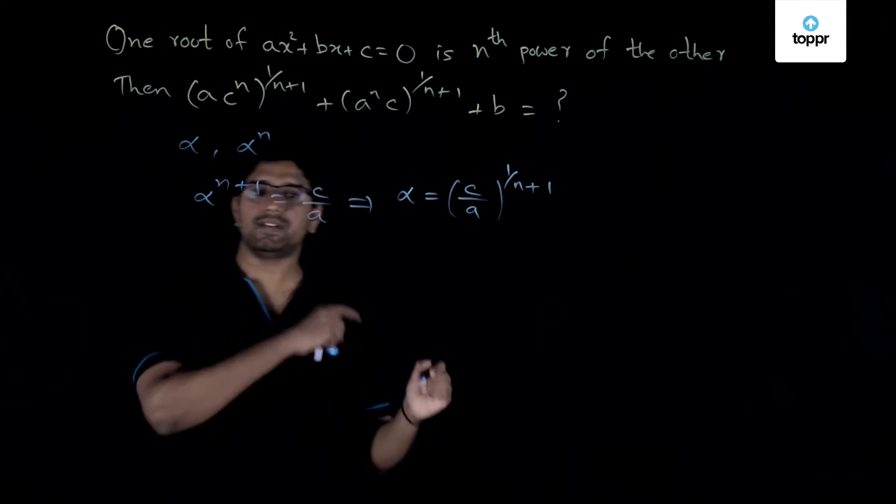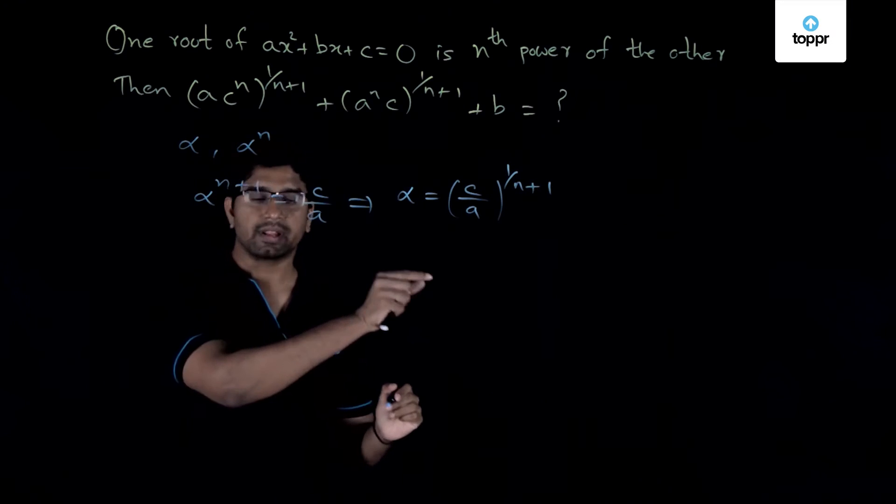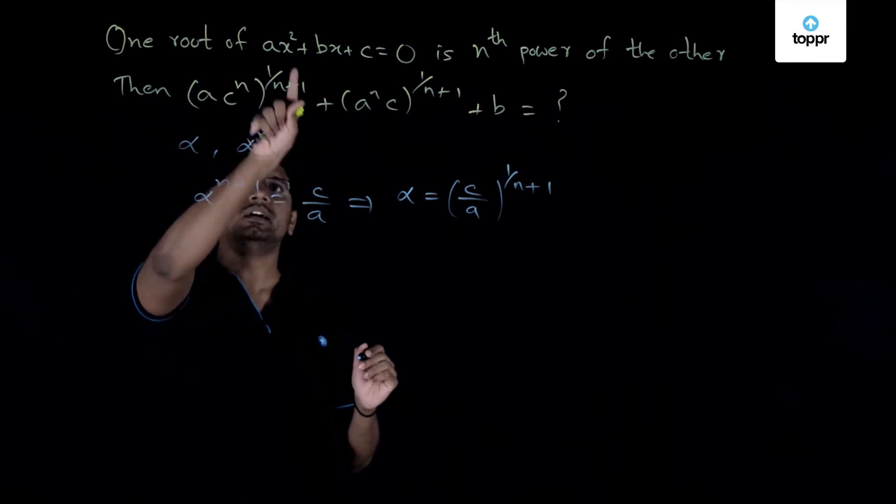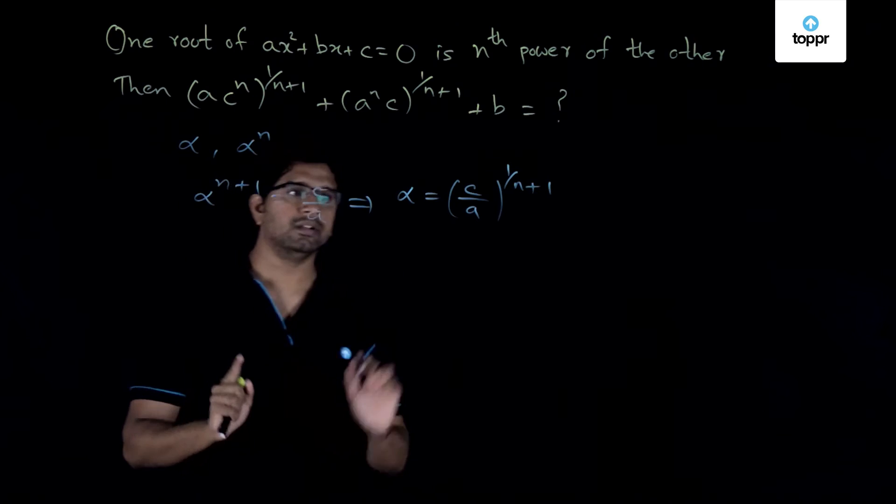Now here itself we have got an idea that we are on the right track because the expression to be evaluated again contains the exponent 1 by n plus 1. So things look good.